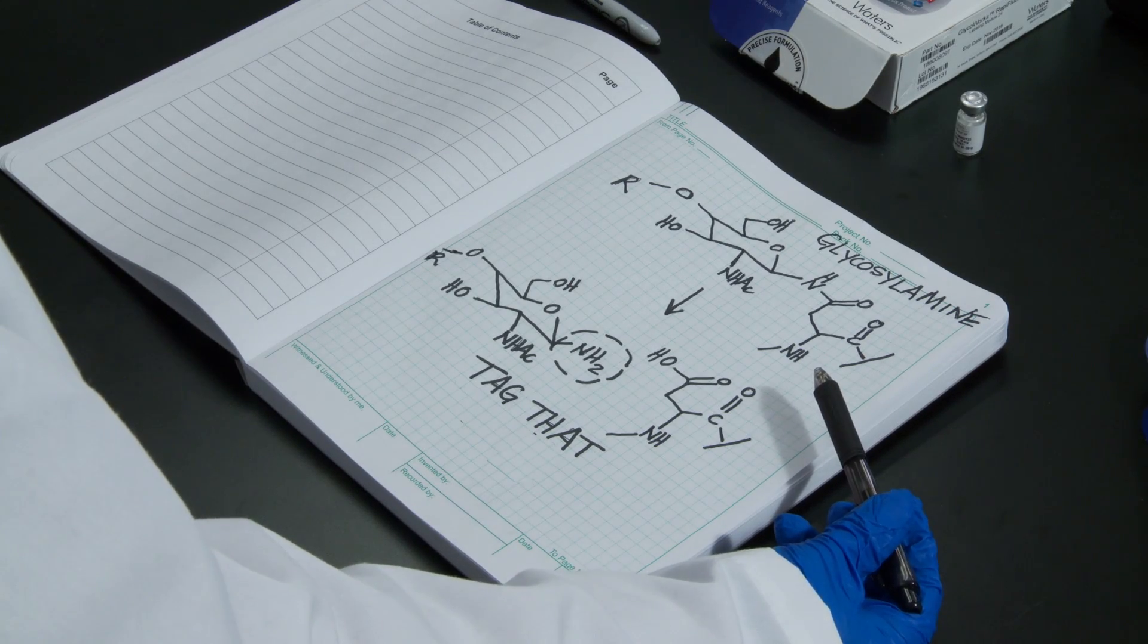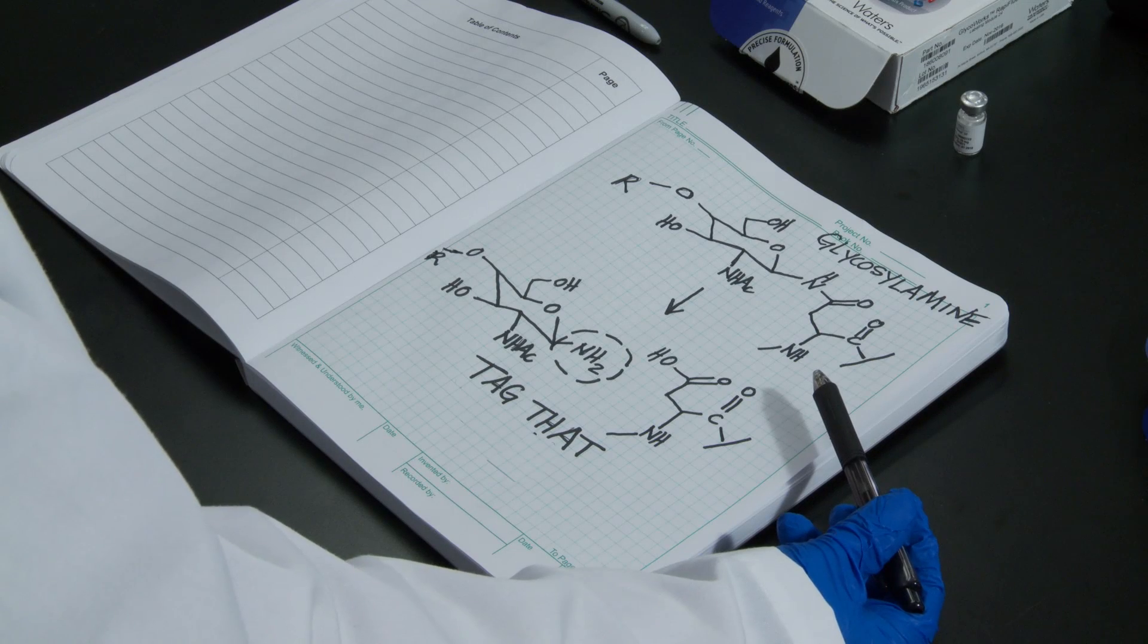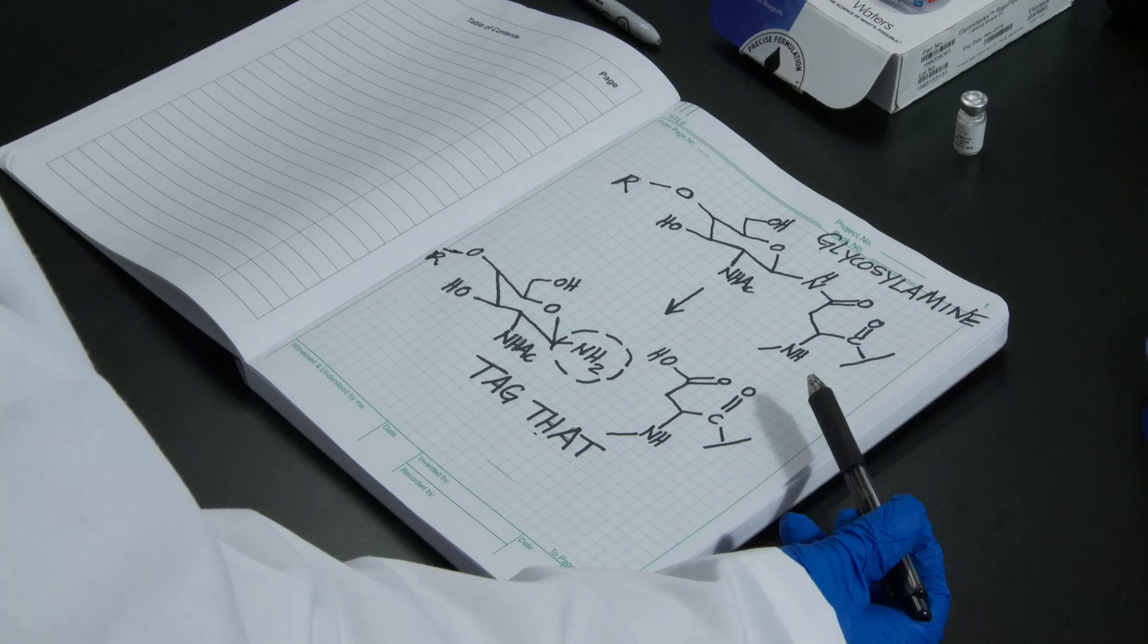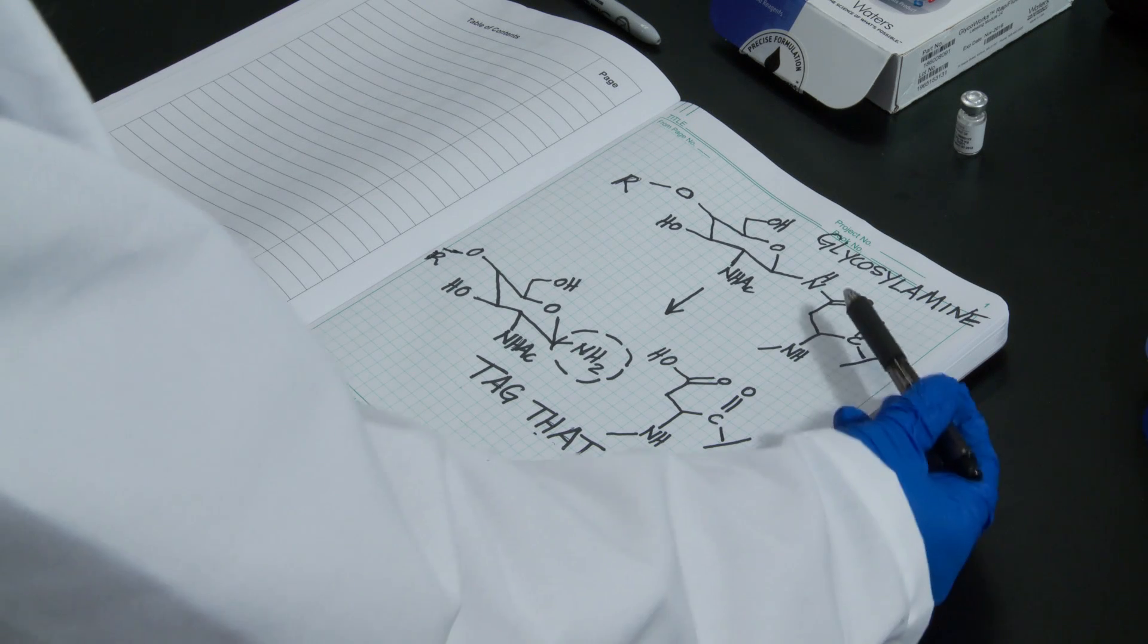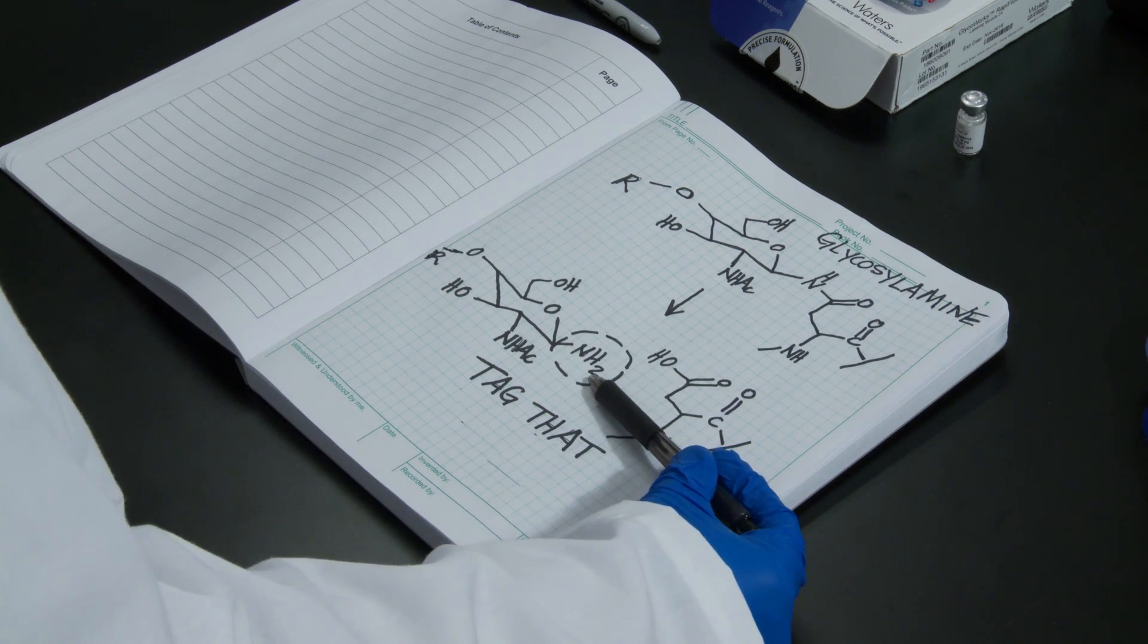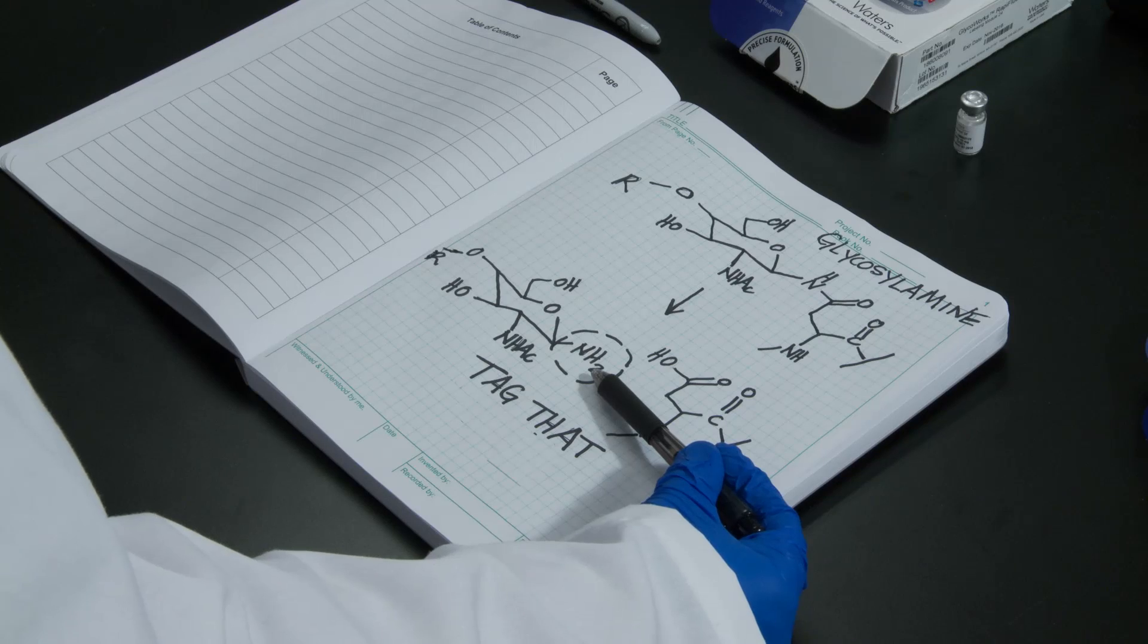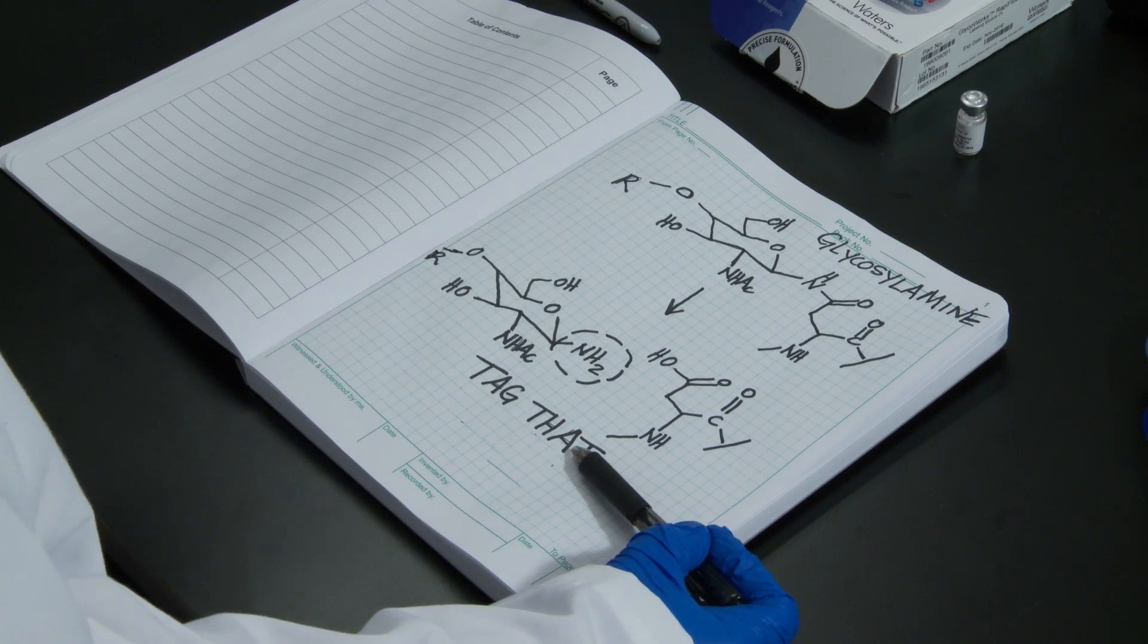So, conventional N-Glycan sample preparation is dependent on reductive amination. This is a process that requires glycans to undergo multiple chemical conversions and a lengthy high temperature incubation. All of that can be avoided. N-Glycans are actually released from glycoproteins in an amine form that we refer to as glycosylamines. With the right electrophilic reagent, this amine can be rapidly tagged. And the labeling reaction is remarkably fast, being near instantaneous.